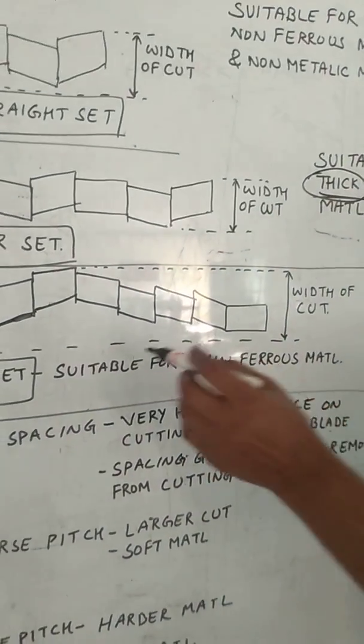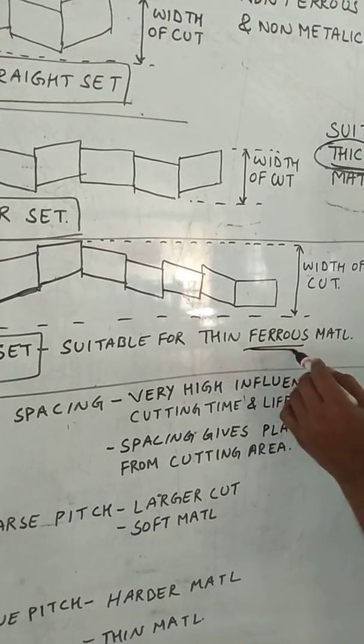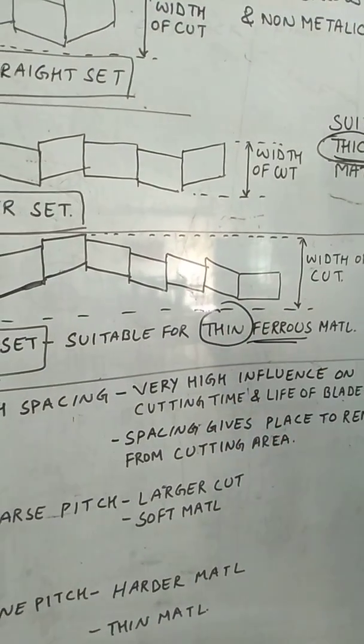While in wavy set, this is the width of cut. This is suitable for ferrous material, but thin size of ferrous material.